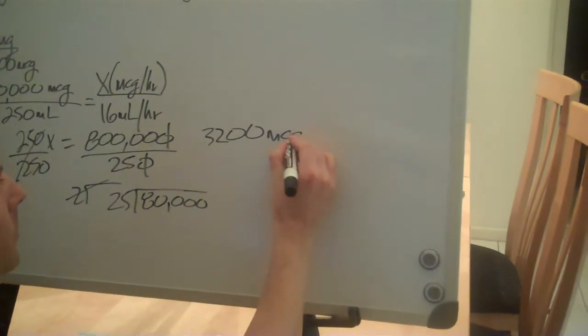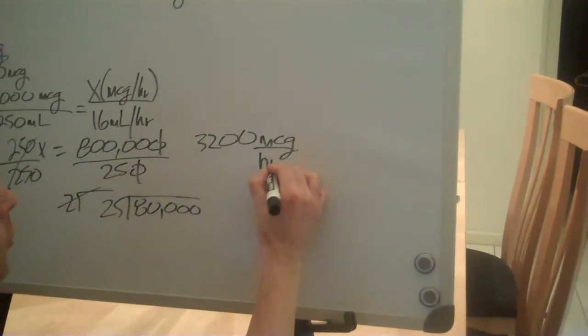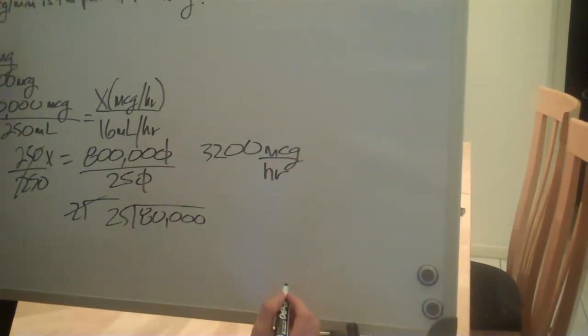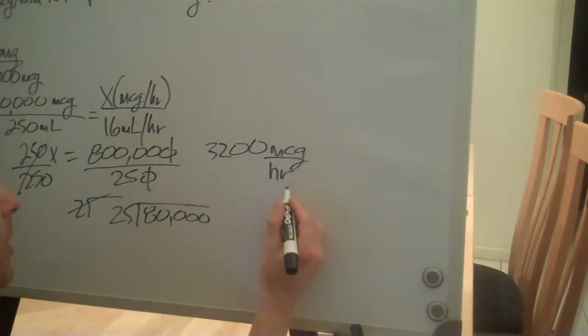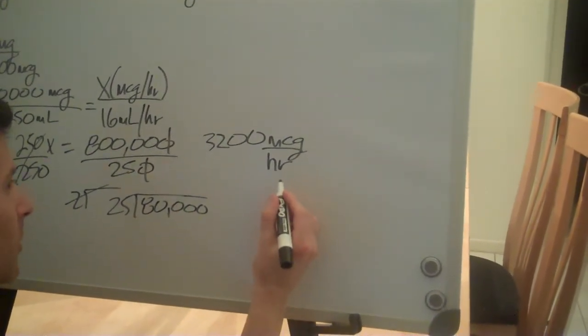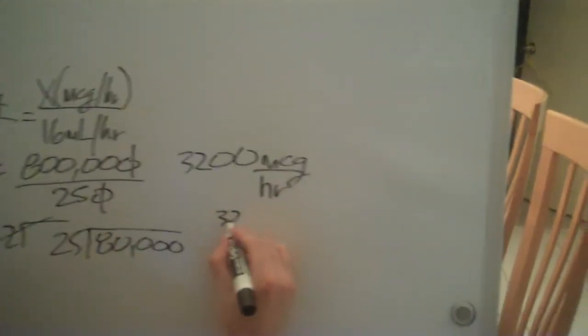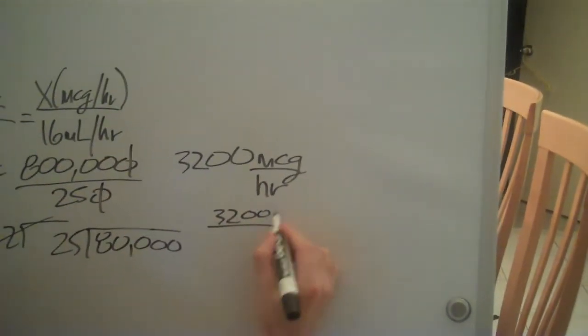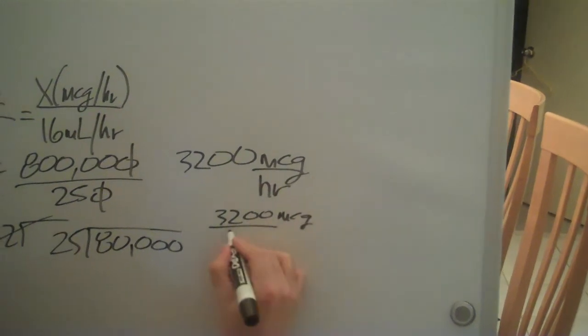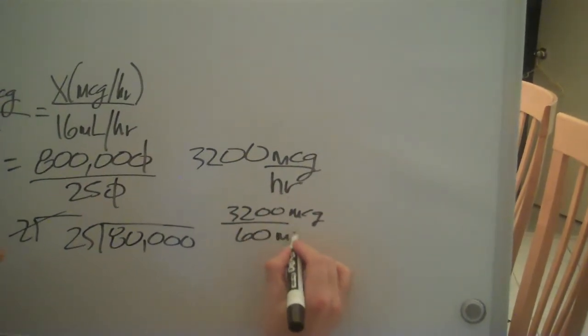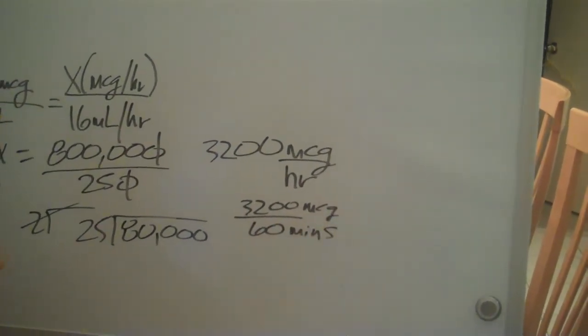3,200 micrograms an hour. We're trying to solve for micrograms a minute. We know that one hour is equivalent to 60 minutes. So we're going to lose the hour and divide by 60 minutes. And we're just going to do that.